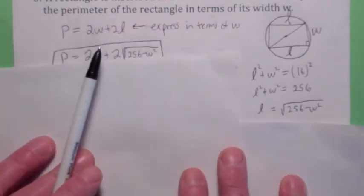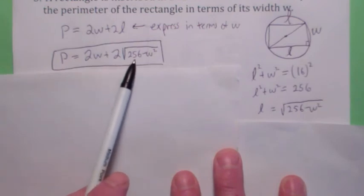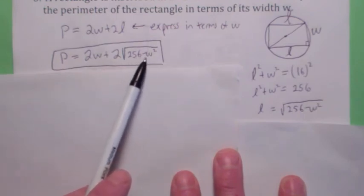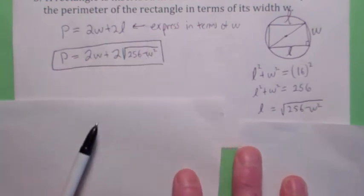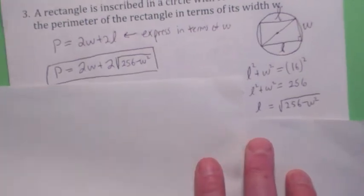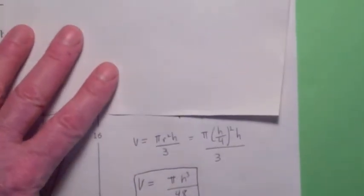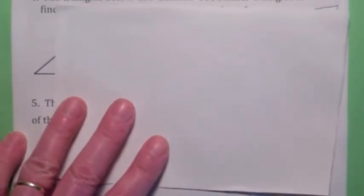And then we go back up to the perimeter function. Wherever there is an l, you can plug in the square root of 256 minus w squared. I believe that's all we can do. All right, let's keep on going here. Something else I want to talk about. Maybe you've seen this before.